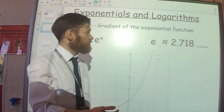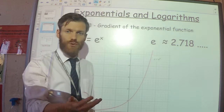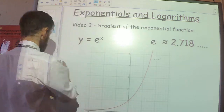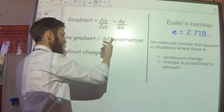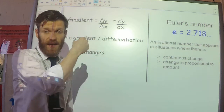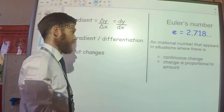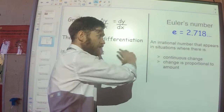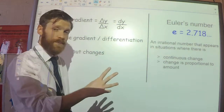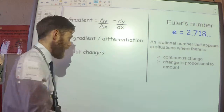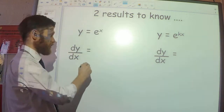When we covered differentiation earlier this year — when we covered gradient — we know that's all about changes. The gradient is the change in y divided by the change in x; the gradient function is about how the y coordinate changes with respect to the x quantity. So there's a link between these two topics, and in fact the exponential function is very unique in that when you differentiate it, it is its own gradient function.